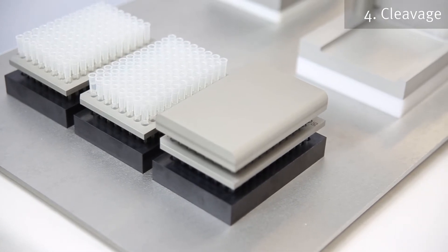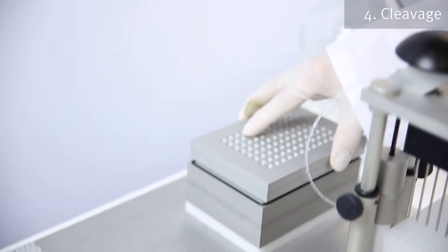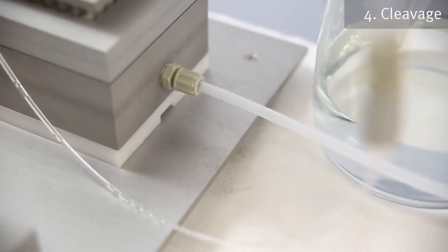While the cleavage step is in progress, the transfer box can be prepared. Place the deep well plate inside the transfer box and connect the outlet to a vacuum source.